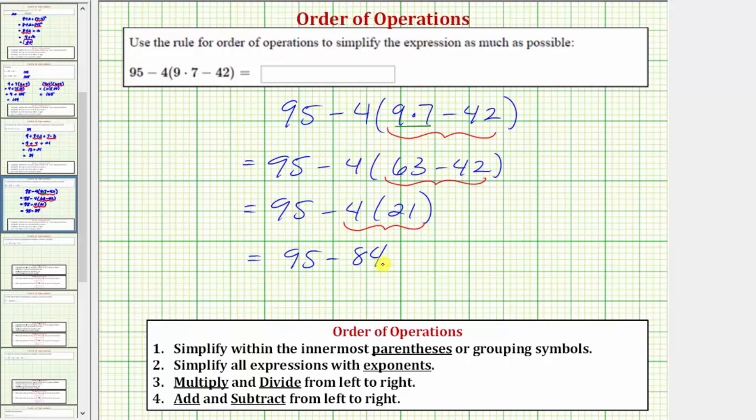We only have one operation left, which is subtraction. 95 minus 84 equals 11. So the given expression simplifies to 11, or has a value of 11.